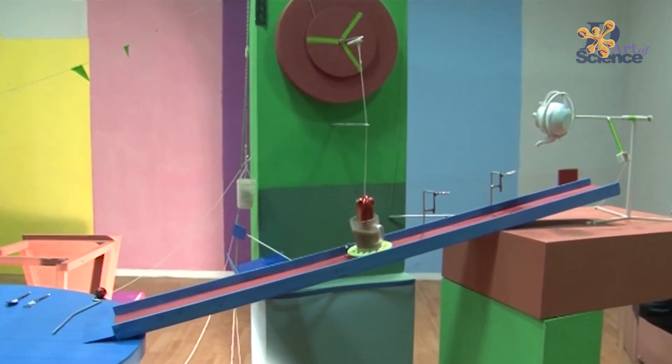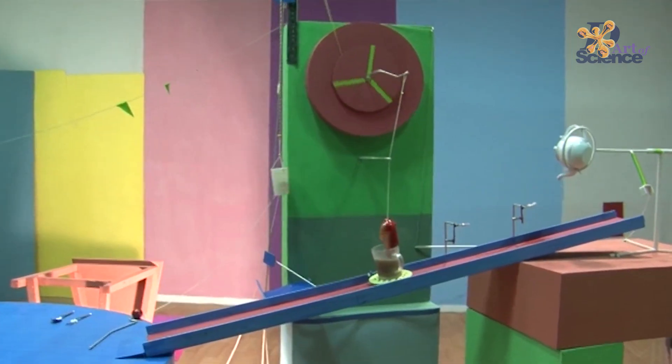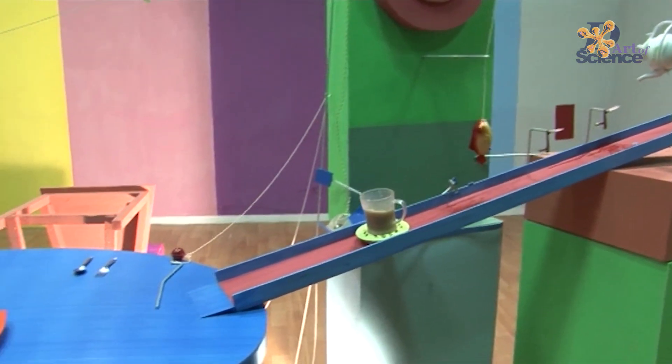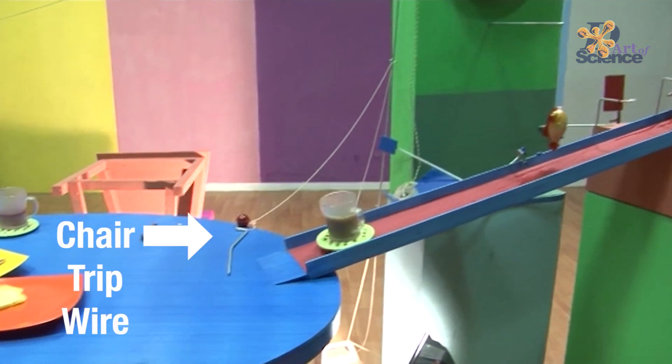Meanwhile this same weight comes down and lands on a platform that releases the cup. Now the cup slides down to the table and trips the last wire to release a chair weighted to stand up at the table.